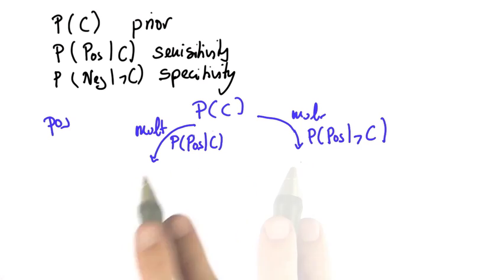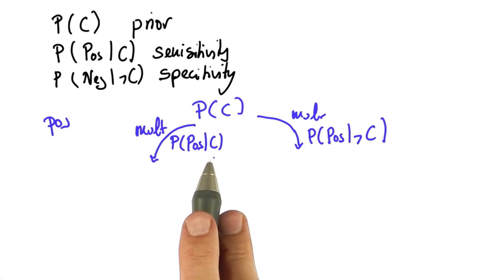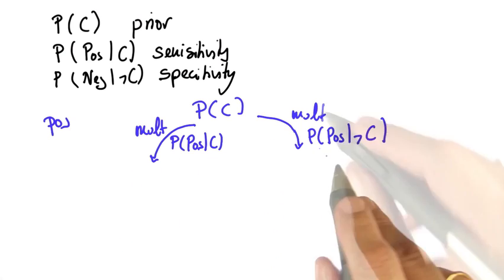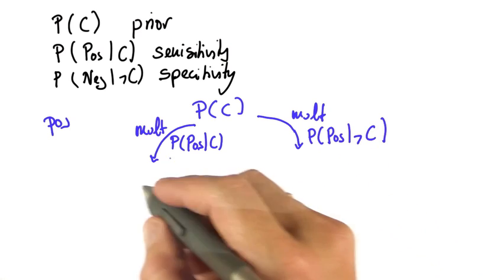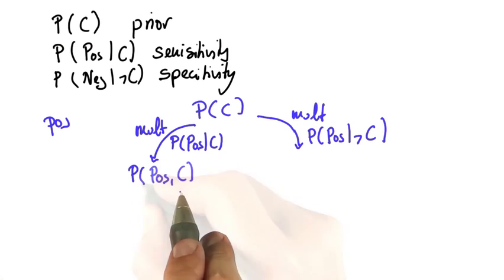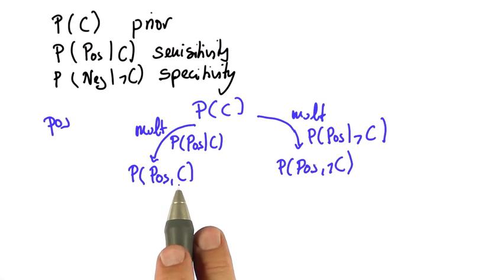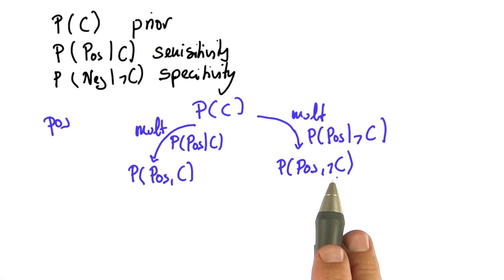This is your branch for the case that you have cancer. This is your branch for the case of no cancer. When you're done with this, you arrive at a number that now combines the cancer hypothesis with the test result, both for the cancer hypothesis and the not cancer hypothesis.